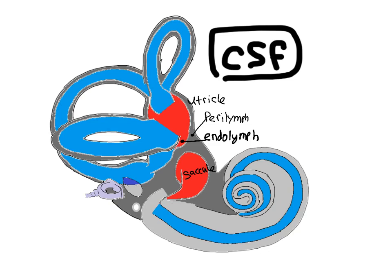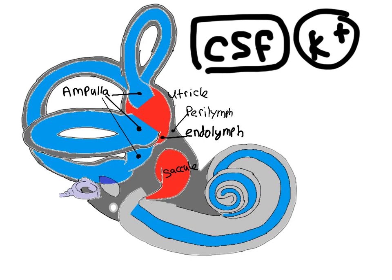So we have perilymph and we have endolymph. The endolymph is completely different from the perilymph as far as its ionic profile. In fact, it is extremely high in potassium - it actually has a higher potassium content than the inside of the cells of the membranous labyrinth. Now, in these semicircular canals, at the ends of them, there are these outpouchings called ampulla. These ampulla actually contain the cells that detect the movement of endolymph through the semicircular canals and turn that into an electrical signal.